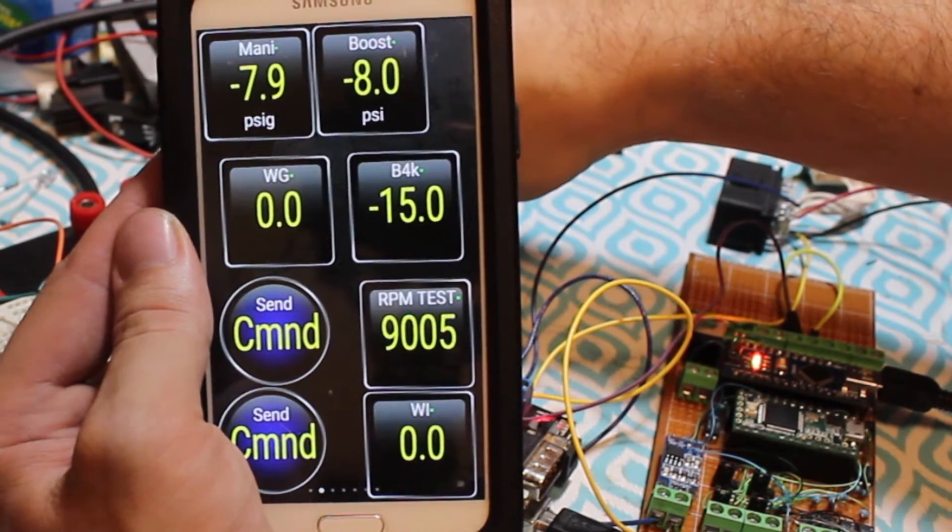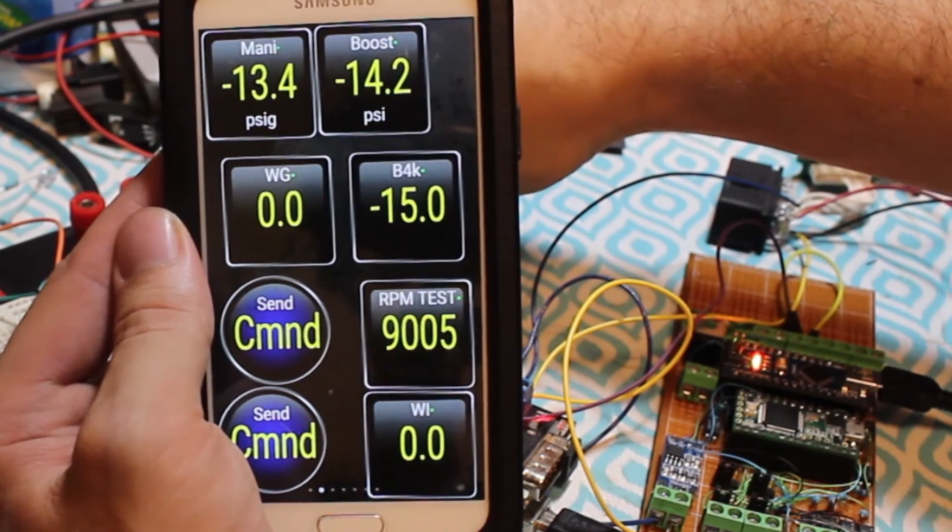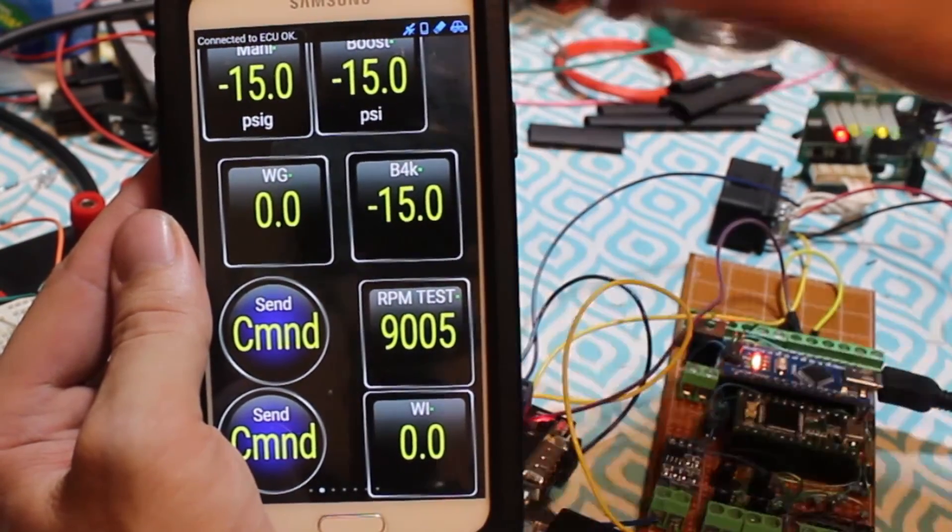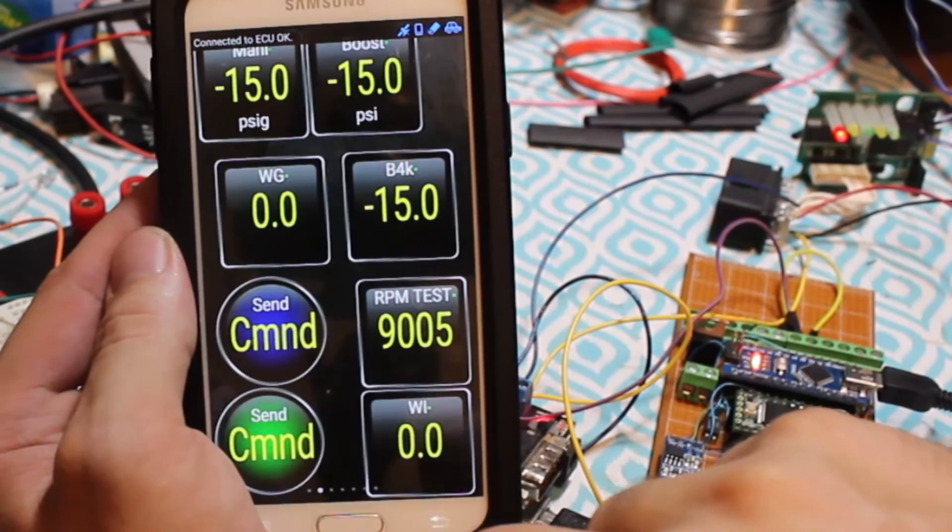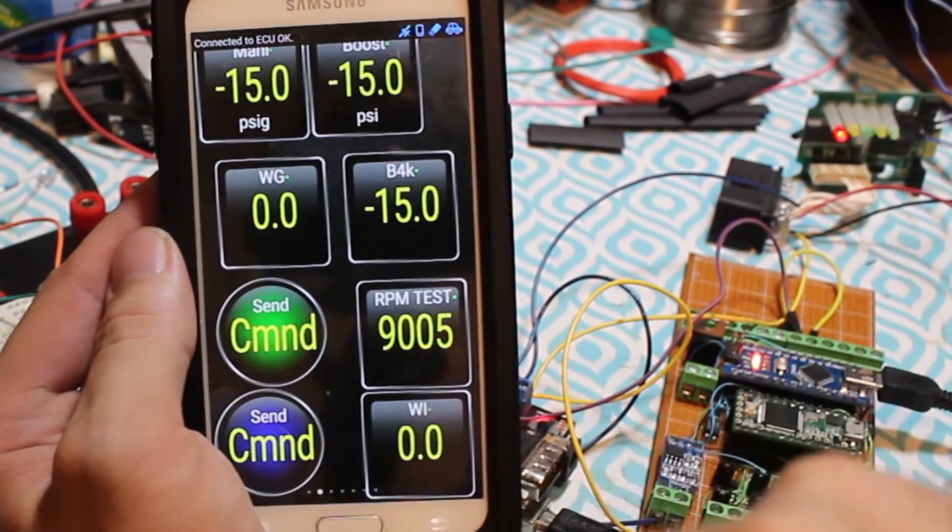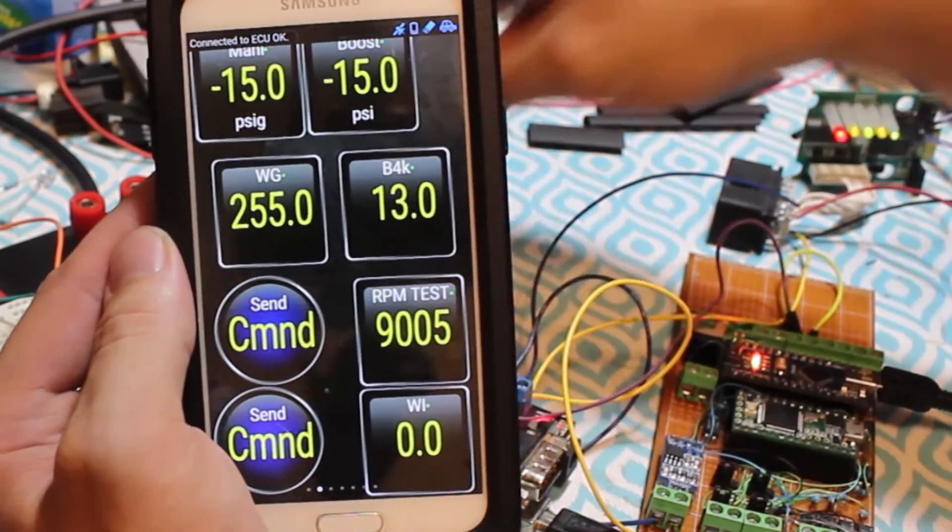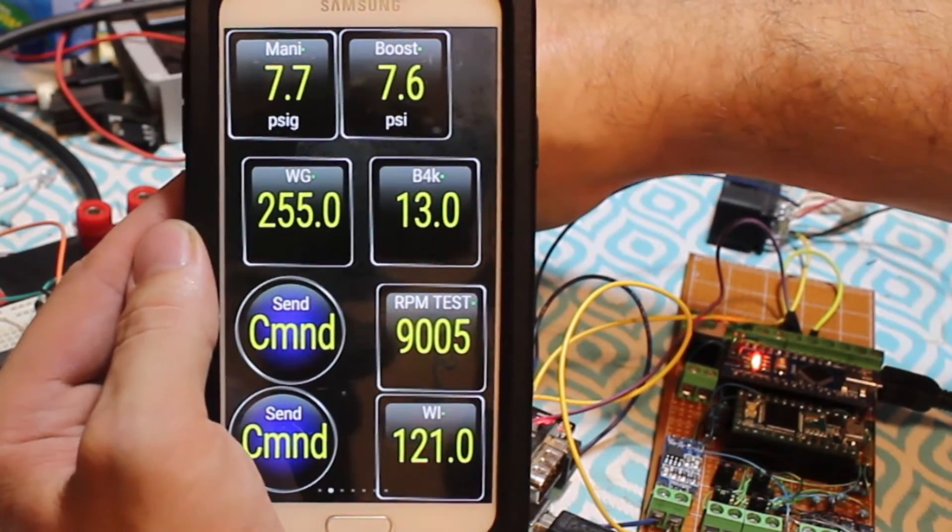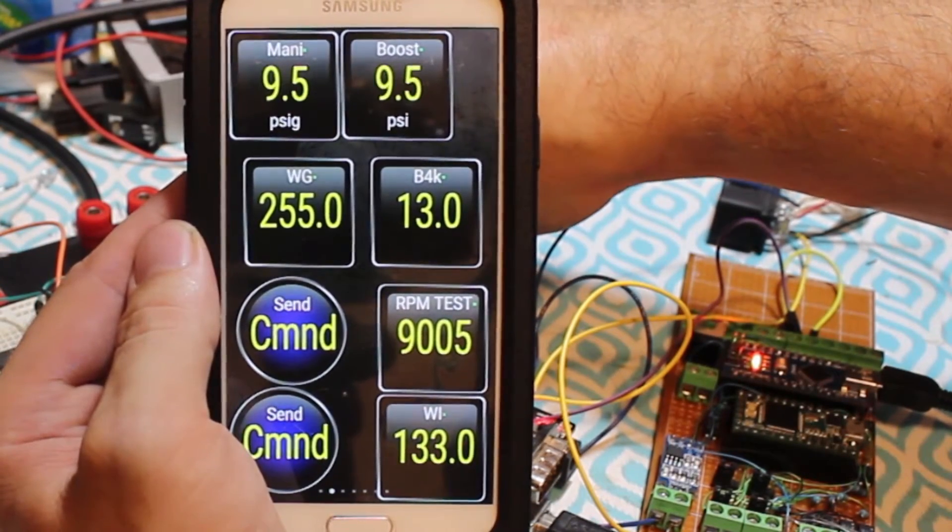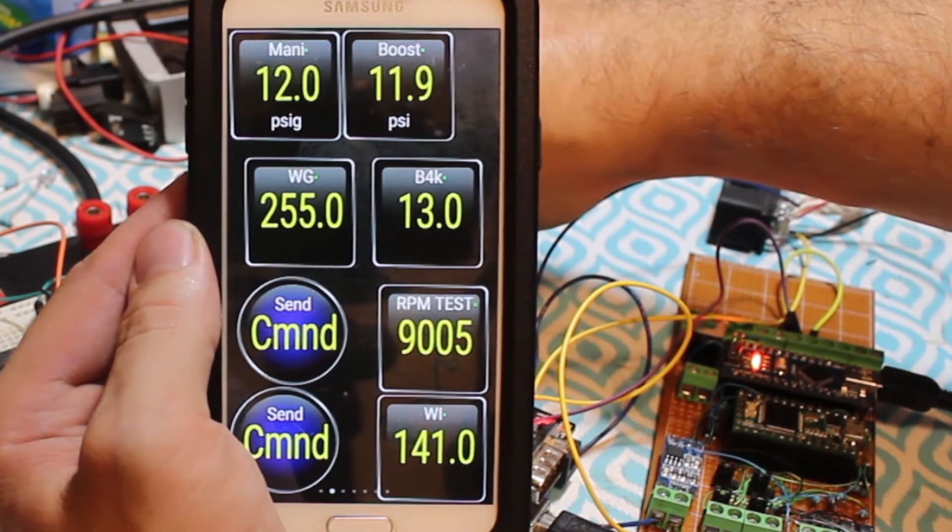With it set for full vacuum, the wastegate pulse width modulation signal is 0, or full open. Now I set it to 13 PSI, and the wastegate goes to 255, or full closed. Then as pressure tracks up, it is set as a proportional and integral controller. As it goes to set point, the wastegate starts to modulate.